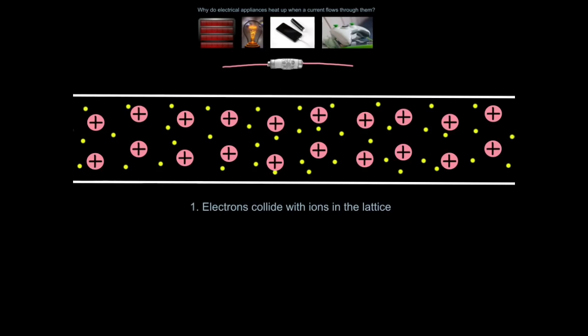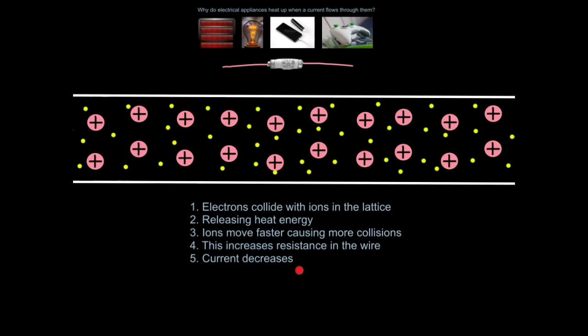So to explain this heating phenomena, you would say electrons in the wire collide with ions in the lattice. A lattice is any structure with a regular arrangement of particles, such as these ions in rows. This causes the release of heat energy. The ions move or vibrate faster, causing more collisions. This increases the resistance in the wire, and so the current decreases.